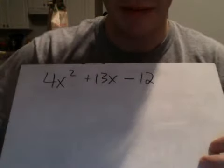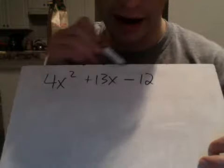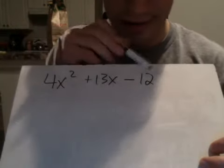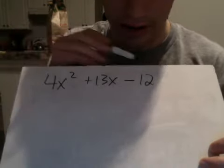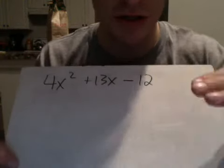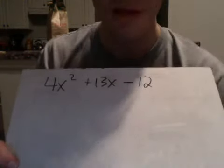First step is to see if there's a greatest common factor here. They all don't have x's, so I can't do that. And then there's no number that goes into all of them. So there's no greatest common factor.